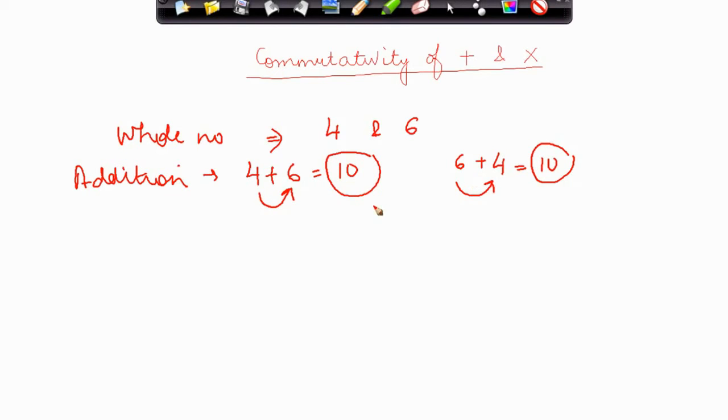In both cases the result is unaffected by the fact of which number is first. So the result is not affected by whether we add 4 first and 6 thereafter, or we add 6 and then add 4 to that number. This is called the commutativity of addition.